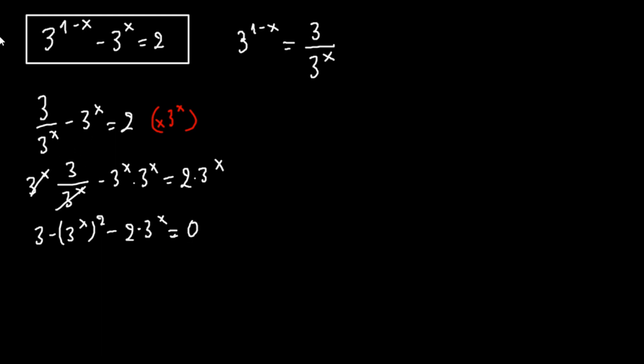Now we multiply both sides by minus 1, so we have 3 raised to the x squared plus 2 times 3 to the x minus 3 equals 0.